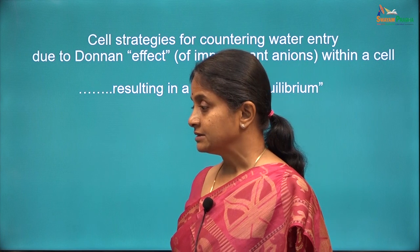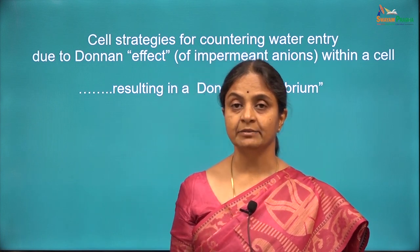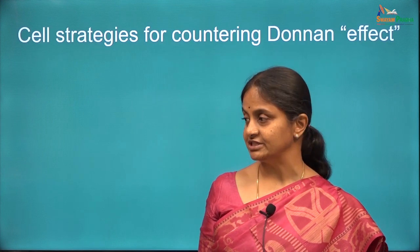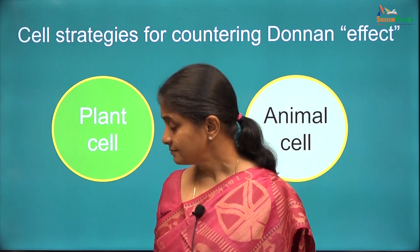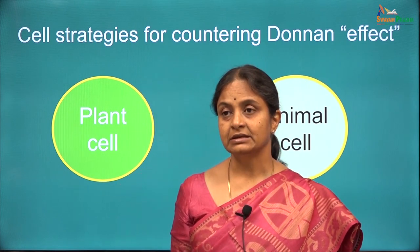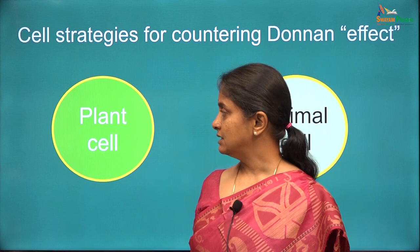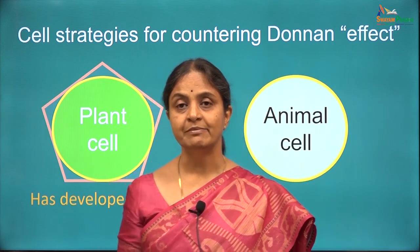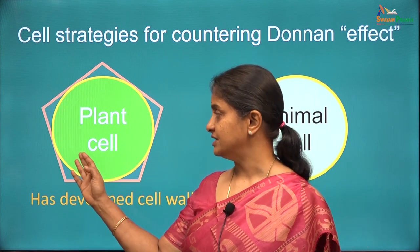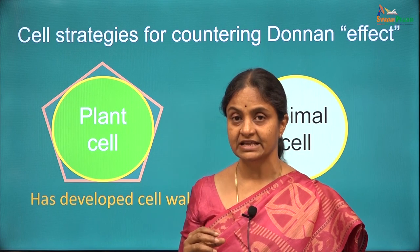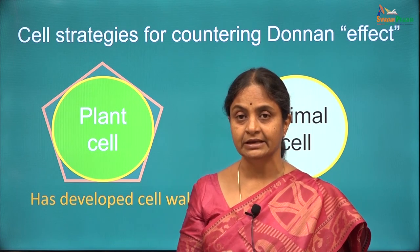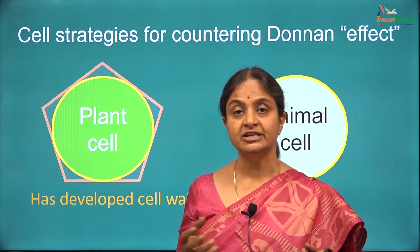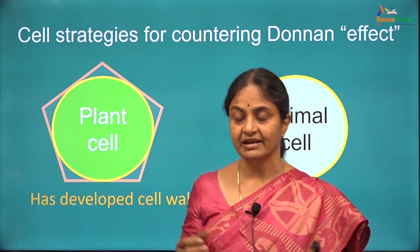Let us look at strategies that plant cells and animal cells adopt to handle the Donnan Effect and to achieve an equilibrium state. The plant cells have taken the easy option. They have developed cell walls around themselves to limit water entry. Any water entry will increase the hydrostatic pressure within the plant cell because it is caged within a rigid cell wall which will not allow the cell to expand. So there is no danger of the cell expanding and breaking up.